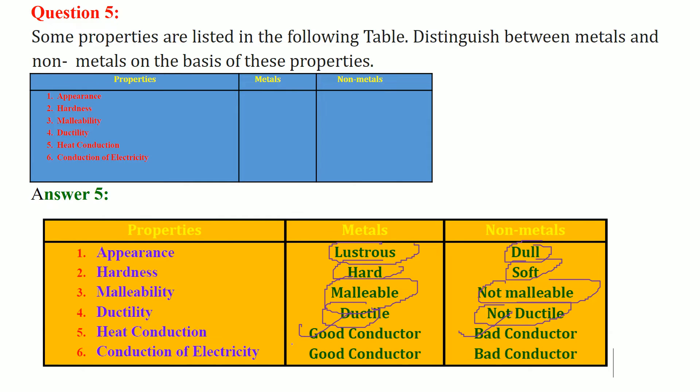Conduction of electricity: good conductor for metal, bad conductor for non-metal. Metals are malleable, ductile, and have good heat and electricity conduction, while non-metals are neither malleable nor ductile and are bad conductors of heat and electricity.